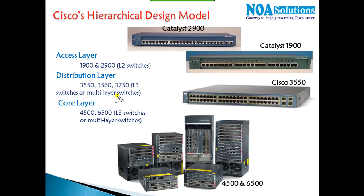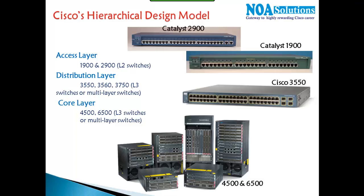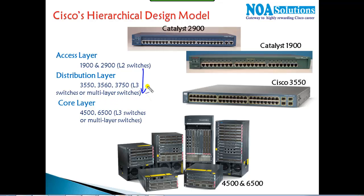Cisco designed all switches in a three-level hierarchy. At the access level, we have switches — similar to low-end series routers — generally called Layer 2 switches. These connect to computers, identify devices by MAC address, and forward traffic by MAC address. Typically your 1900 and 2900 series switches are used at end locations. At the next level we have distribution and core level switches — the 3550, 3560, and 3750 series — which are higher speed, support more ports, and are called L3 or multilayer switches.